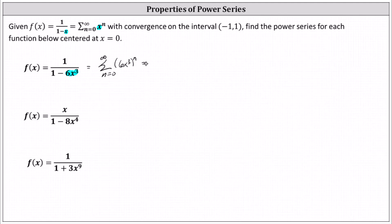Using exponent rules, we can write this as the sum from n equals zero to infinity of six to the power of n times x to the power of three n. Remember the exponent rule: when we have powers raised to powers, we multiply the exponents. So if it's helpful, you can think of six as six to the first.